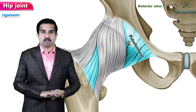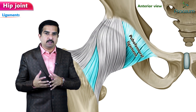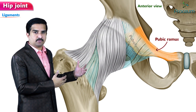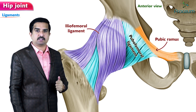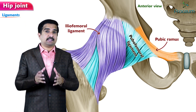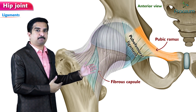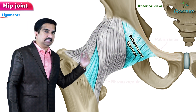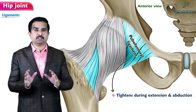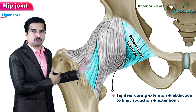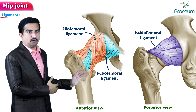Next is the pubofemoral ligament. As the name suggests, it arises from the pubic ramus and merges inferolaterally into the iliofemoral ligament, but may also have an attachment to the femoral neck. It reinforces the fibrous capsule inferiorly and tightens during extension and abduction in order to limit abduction and extension of the thigh. These are the outer ligaments of the hip joint.